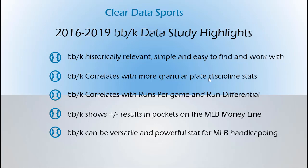BB divided by K is historically relevant, simple, easy to find, easy to work with, and it correlates with more granular plate discipline stats — like outside the strike zone swing rate and swinging strike percentage. It also correlates really well with runs per game and run differential, which is super important in handicapping. It also shows plus-minus results in pockets. After probably 50 to 60 hours looking at this stat and doing regression studies, I think it can be a really powerful stat for MLB handicapping.